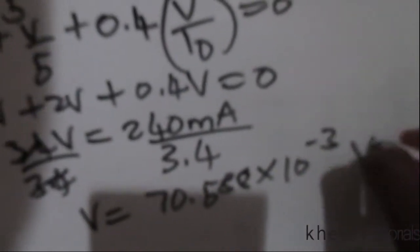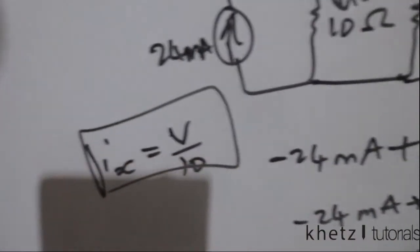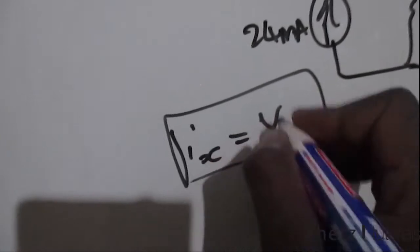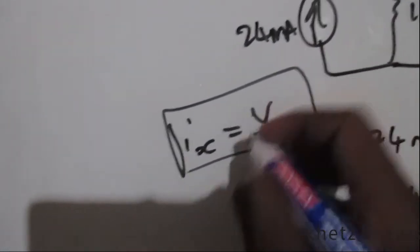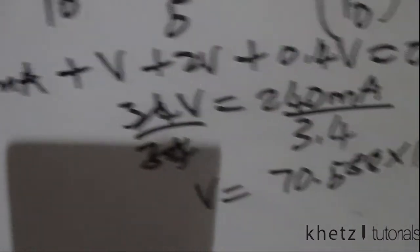So we aren't done solving the problem since the problem is asking for ix. We are going to substitute v into that equation, and therefore finally ix, substituting this v into that formula, so v divided by 10.